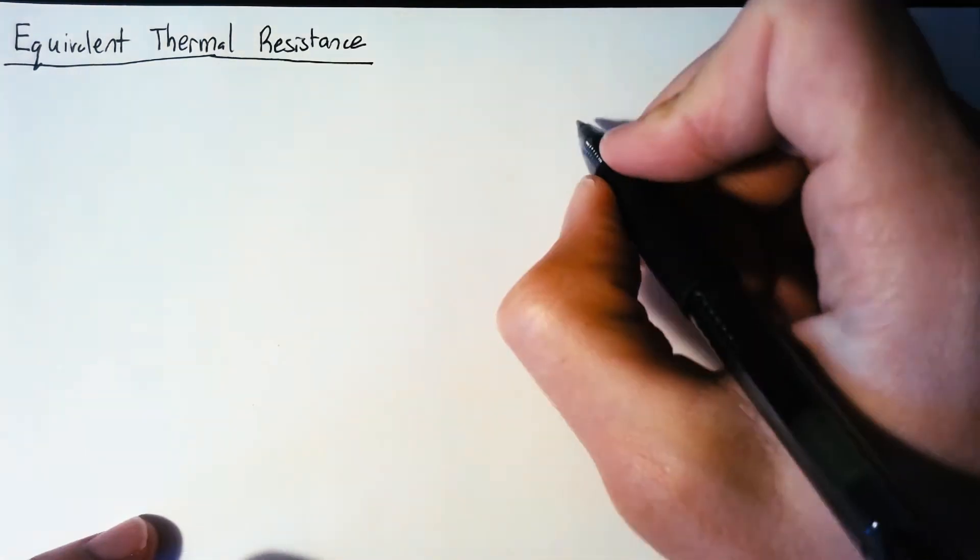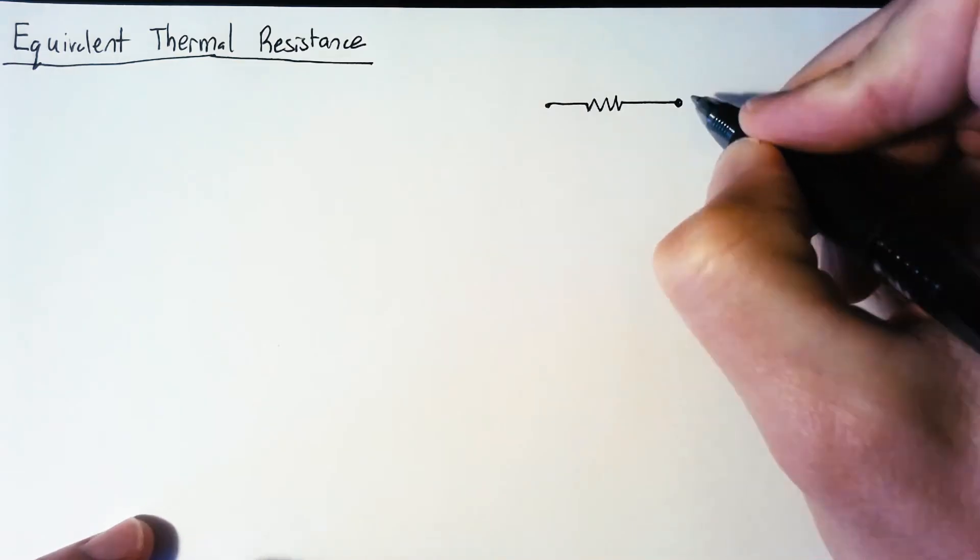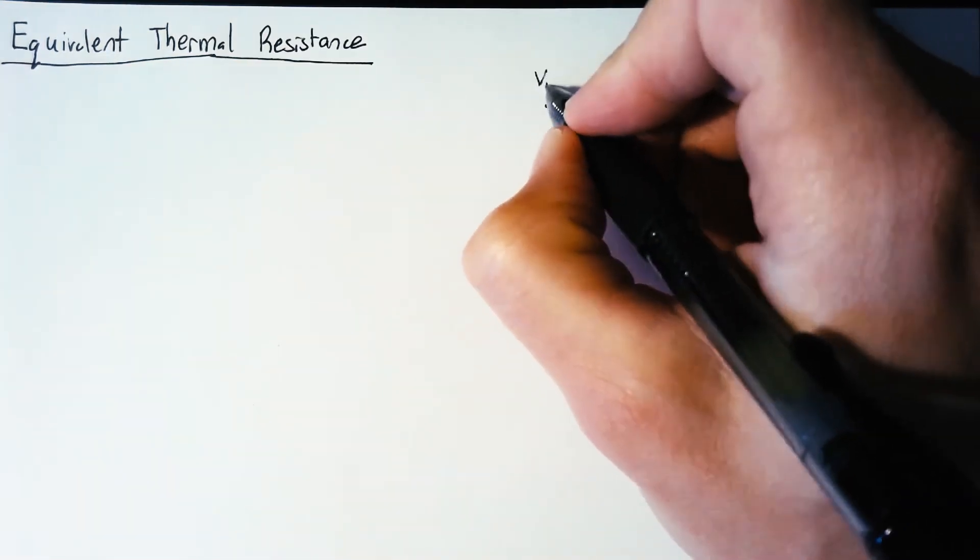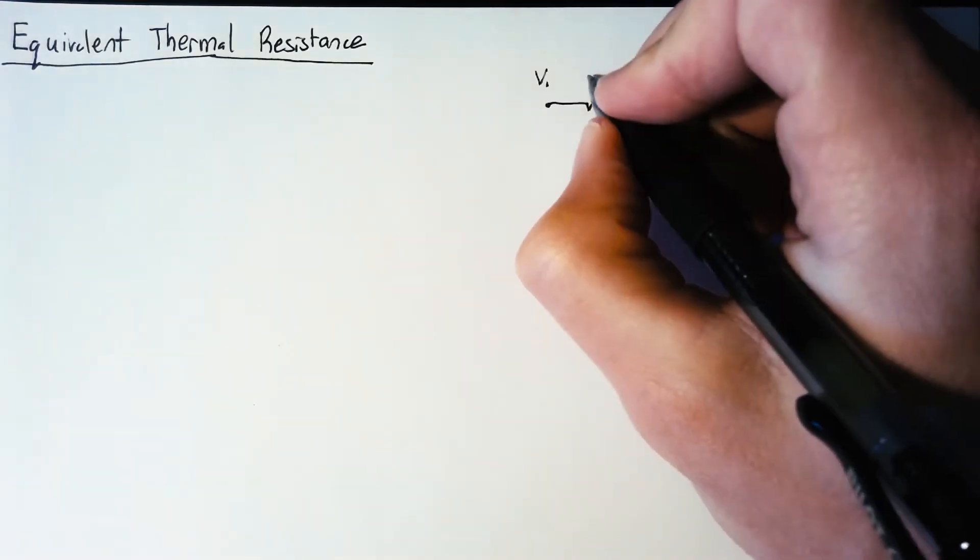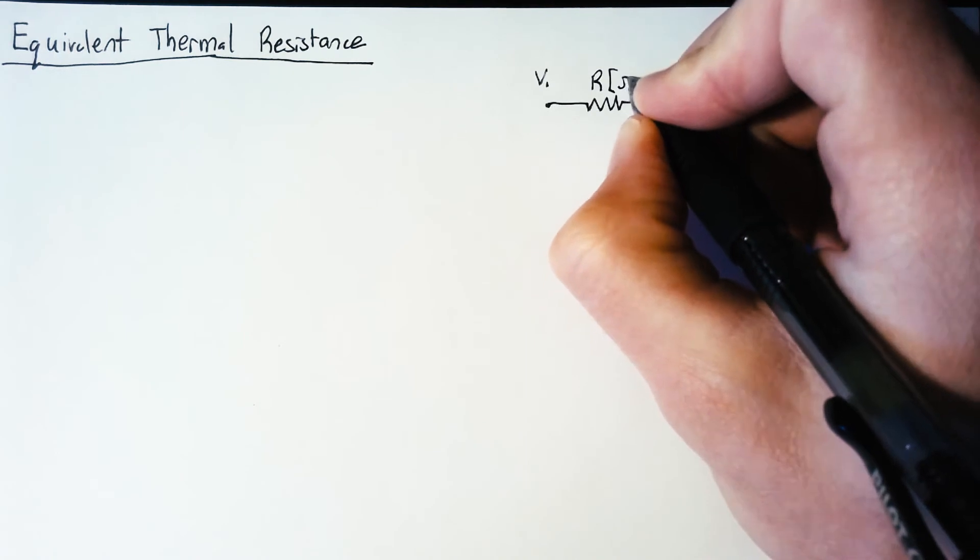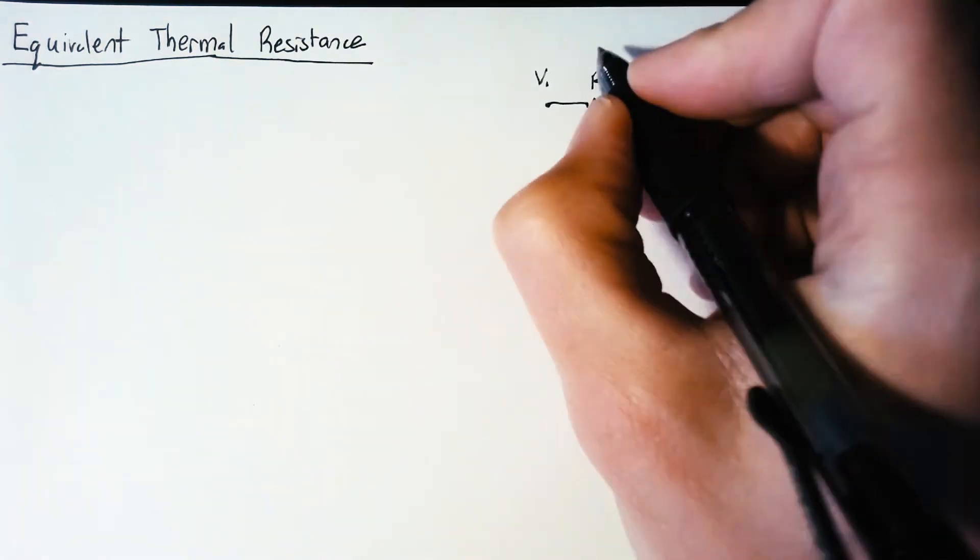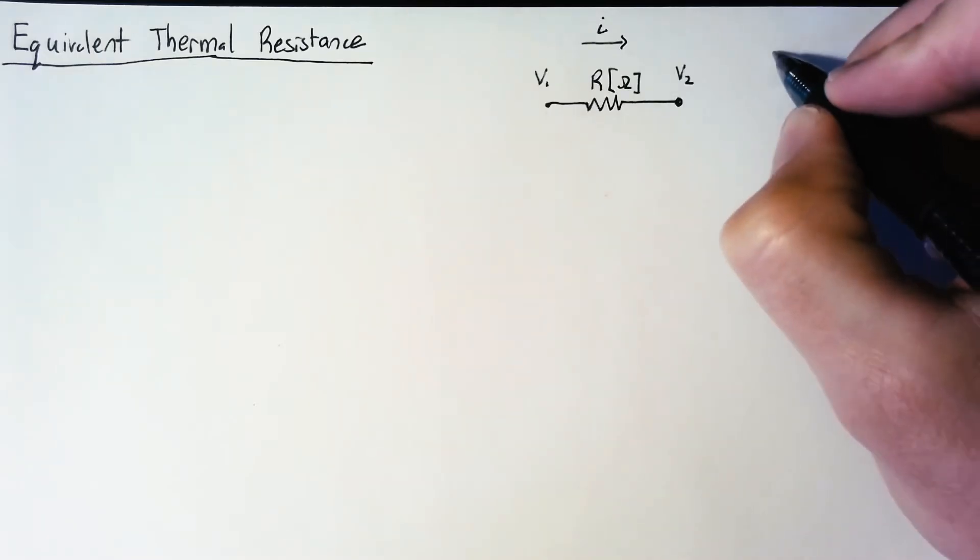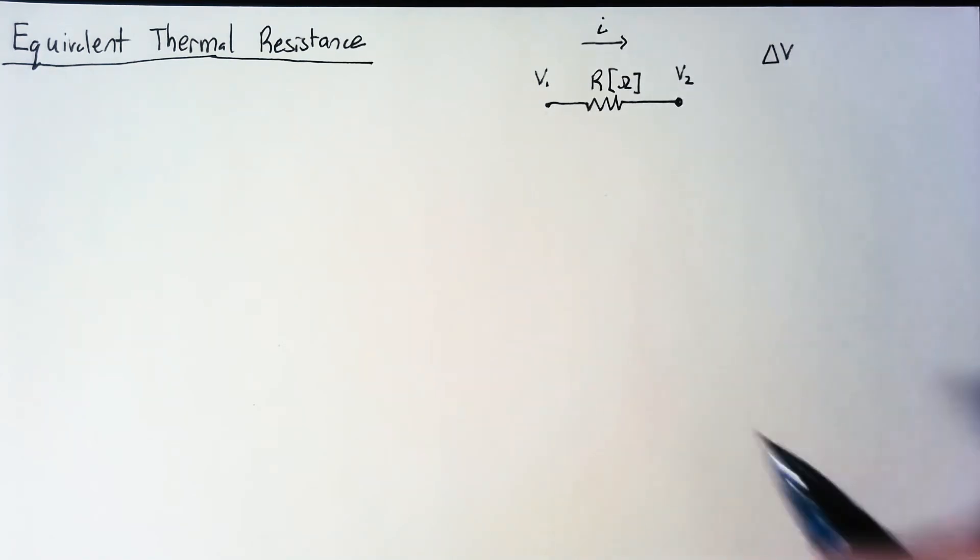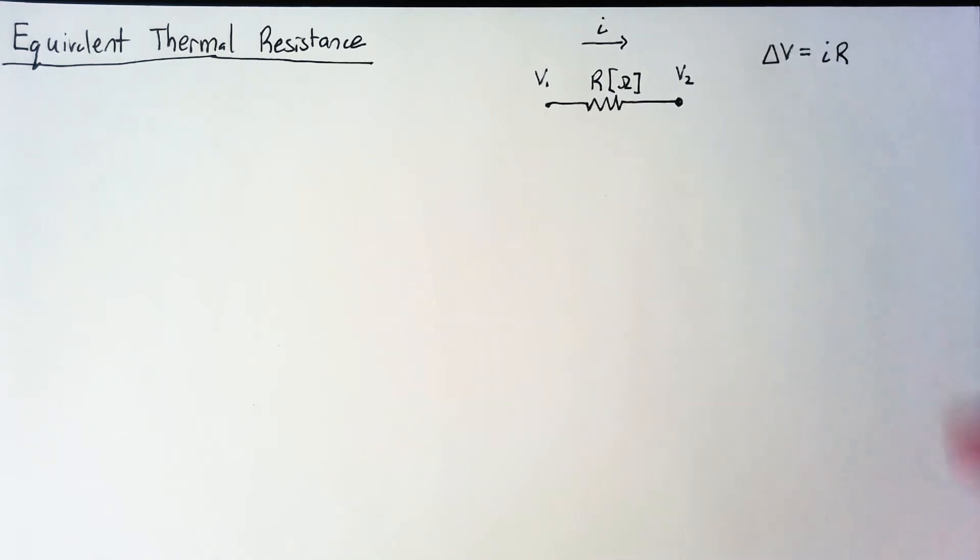So let's look at a very simple circuits problem, where we simply just have a single resistor and a voltage difference across that resistor. This resistor has some resistance, which is measured in ohms. And because of the voltage difference, we're going to have some current through that resistor. And we can point to Ohm's law and say that that change in voltage, the voltage drop, is going to be equal to I multiplied by R.